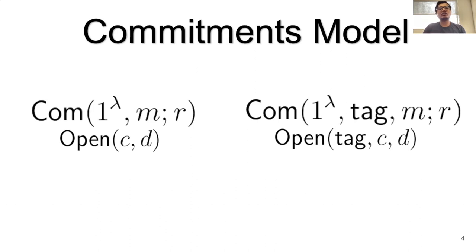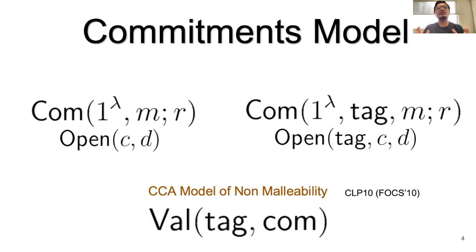The tag model and the untagged model are equivalent if you assume exponentially many tags and a signature scheme. When Alice commits to Bob, she uses her tag: the tag is a verification key, Alice uses her secret signing key to sign the original commitment, and outputs this verification key as the tag. This tag model helps us define what we call the CCM model of non-malleability, which was defined in prior work. We define an additional algorithm called the val algorithm.